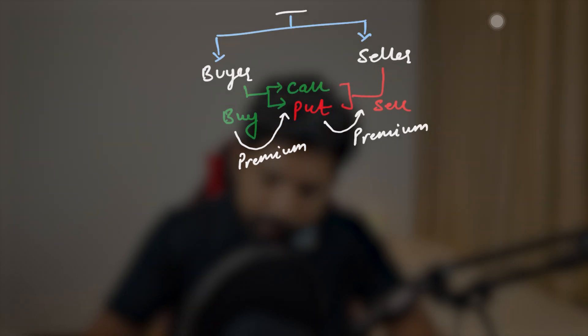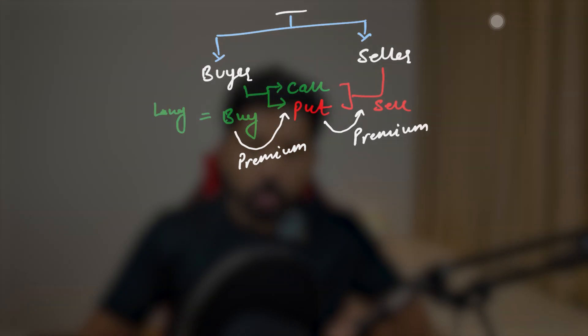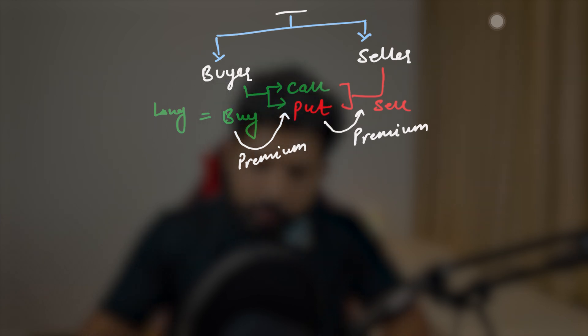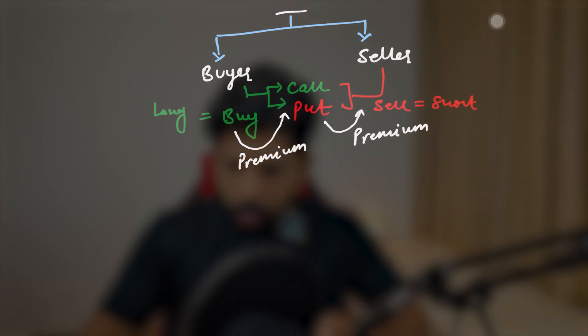One more thing: whenever we buy something, you can also say 'I will long the call' or 'long the put' — that is exactly the same as saying 'I'm buying a call' or 'I'm buying a put.' Similarly, for selling, it is equal to shorting — saying 'I'm selling a call' or 'I'm shorting a call' is exactly the same. Hopefully up to this point everything is clear. Now let's move to the payoff charts and the slopes, which is really very important and really very easy.